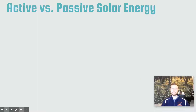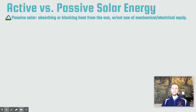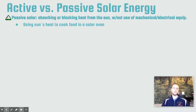The first thing we'll do today is talk about the difference between passive and active solar. Passive solar is the idea that we can either absorb or block the sun's heat without the use of mechanical or electronic equipment. One example is just using a solar oven — basically a piece of reflective material, sometimes plastic surrounding, where the sun's energy can be concentrated to heat a dish.